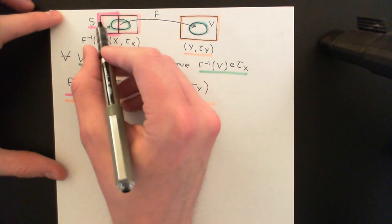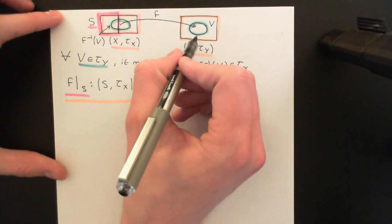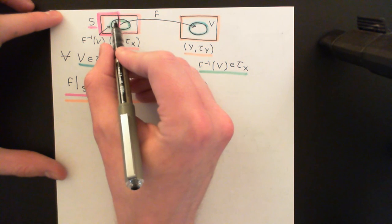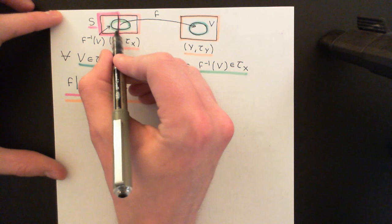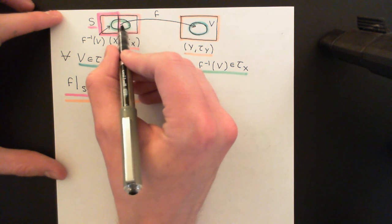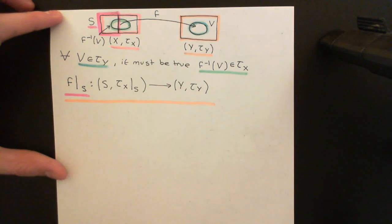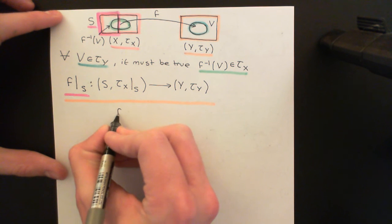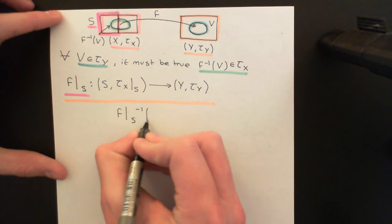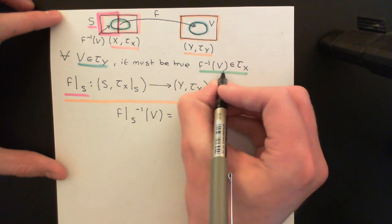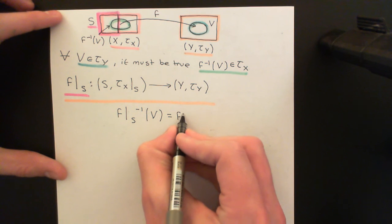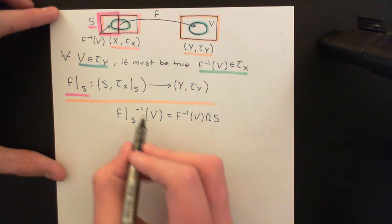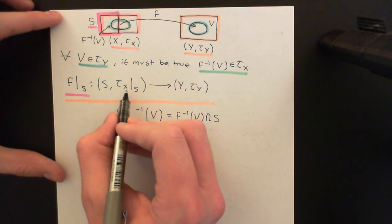When we originally had the mapping from the topological space X to the topological space Y, here was the pre-image. But what's the pre-image going to be now under the restricted map? Well, it's only going to be those elements of the pre-image in X that are actually still in S — not the bits outside of S, because we don't have those elements anymore. So the pre-image of V under the restricted map F, written as F restricted down to S inverse of V, is just going to be F inverse of V intersect S.